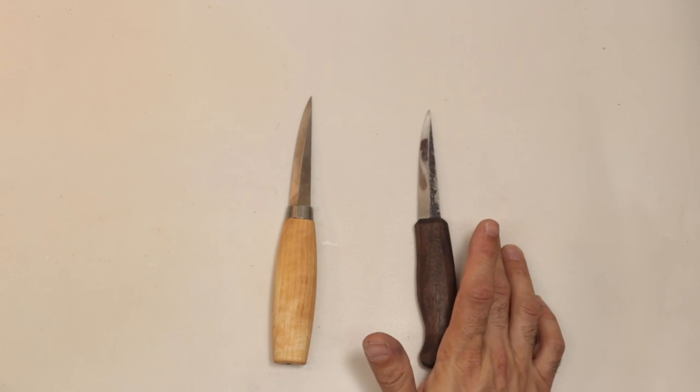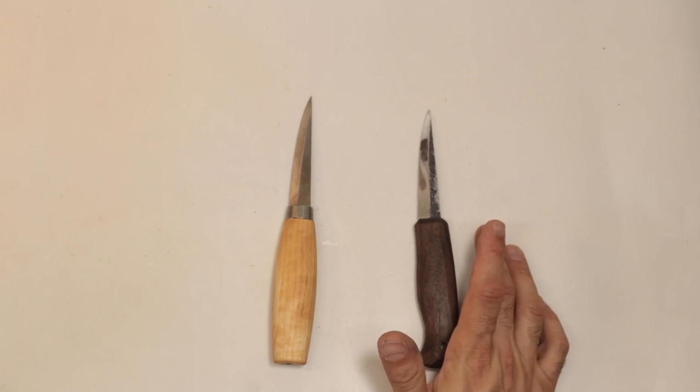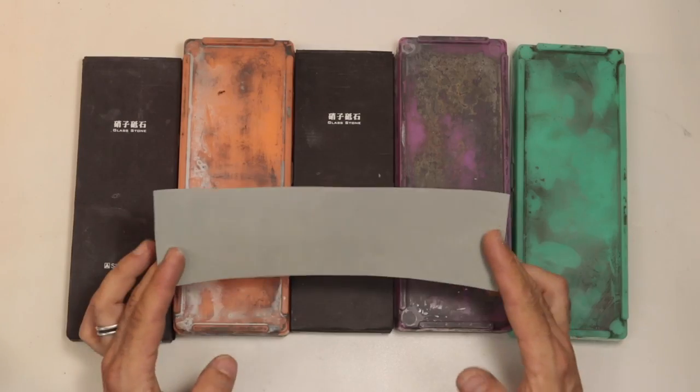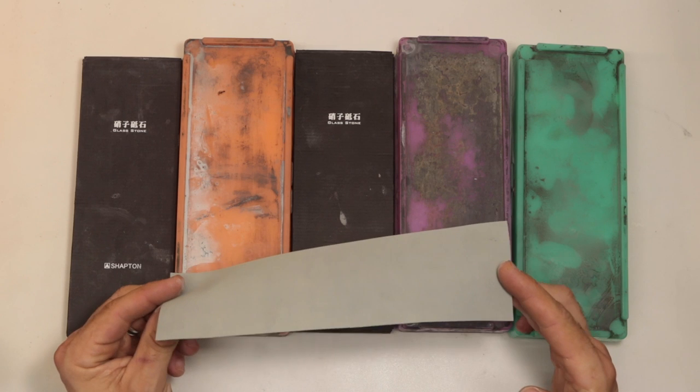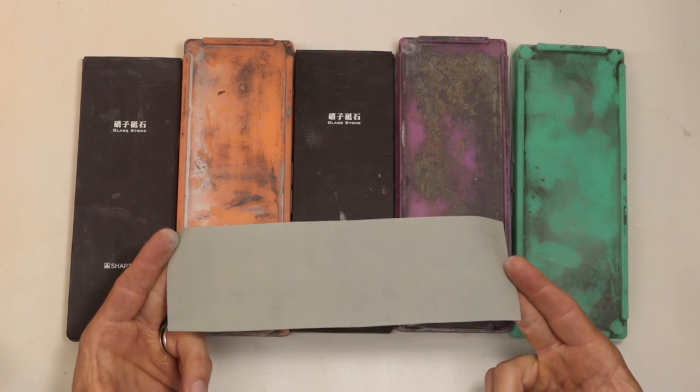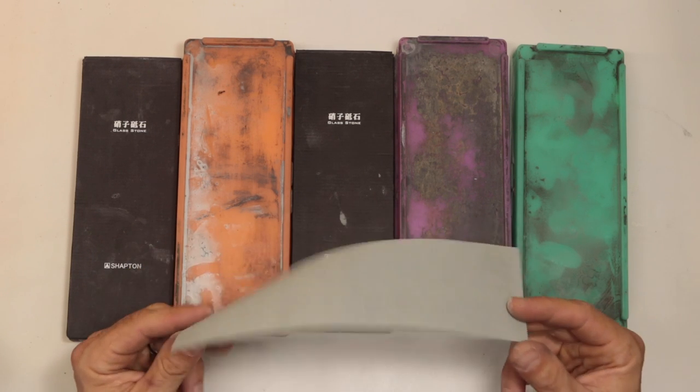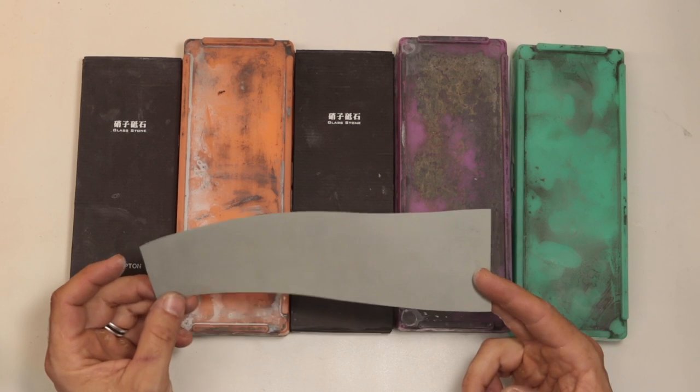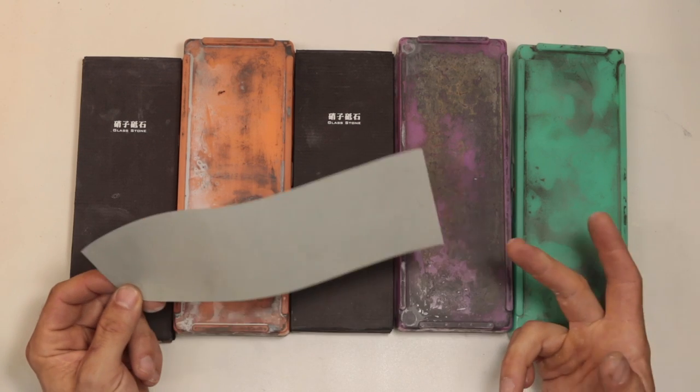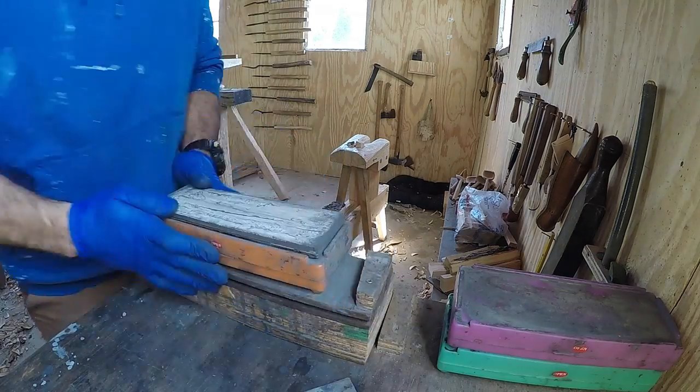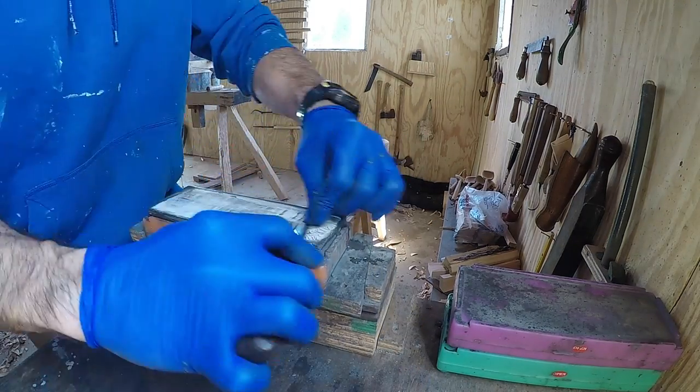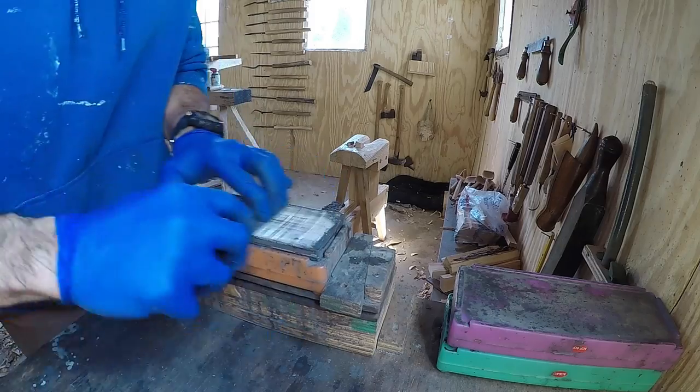While sandpaper will give you an excellent edge, and on that account there's no reason to change, I do however find it to be a little wasteful. A piece of sandpaper can only be used on a couple of tools before it's no longer cutting steel efficiently. So sharpening stones feel like a less wasteful option.